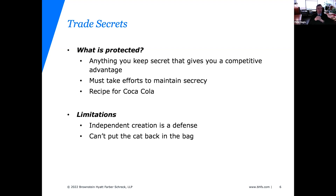The canonical example is the recipe for Coca-Cola — they keep it on lockdown, nobody can access it, and they get to own it forever. If somebody did steal it, you could sue them. The limitation is that independent creation is a defense: if you can reverse-engineer the Coke recipe, nothing's stopping you. But once a trade secret is out in the public, it's pretty much out. If Pepsi reverse-engineers the recipe and puts it on their website, you're out of luck.